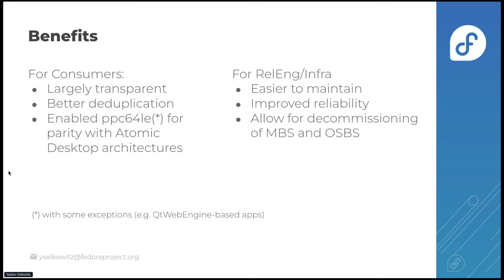Adding that architecture was straightforward in Koji, whereas before it would have required setting up an entire OpenShift cluster with OSBS — that was difficult. For release engineering and infrastructure, this is so much easier and much less overhead. We're even going to be able to start decommissioning some infrastructure we were the main or last remaining users of. In fact, OSBS is on its last days — they're already looking to pull the plug on that. From everything I've heard from the infrastructure team, they are very much enjoying this change as well.